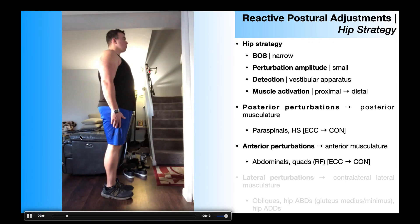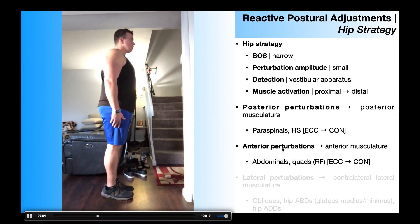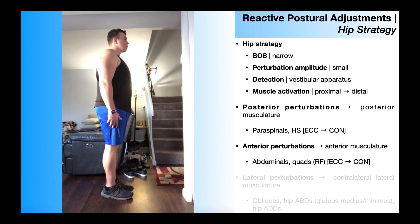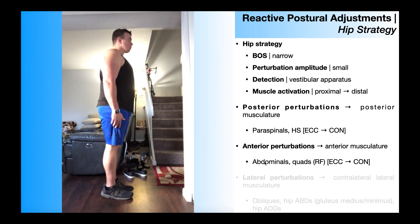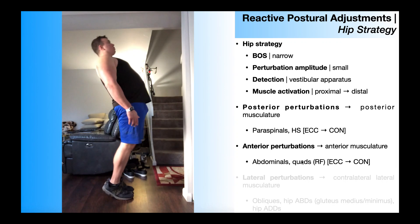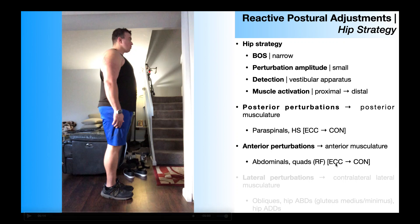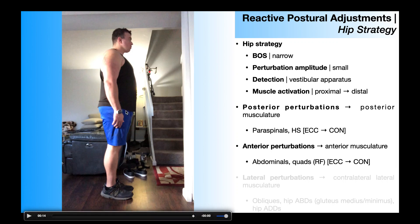Here's a hip strategy induced by an anterior directed perturbation. This causes the anterior musculature to activate — in particular the abdominals, most importantly the rectus abdominis, and the quadriceps, most importantly the rectus femoris, which is acting as a hip flexor. Both of those muscles activate eccentrically first, just like with the posterior perturbation, to help slow the movement down. Then once it's stopped, they contract concentrically to bring the center of gravity back posteriorly and the person to their original position.